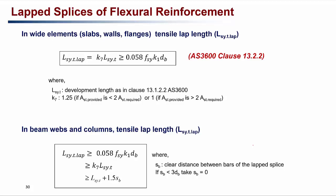AS3600 clause 13.2.2 gives the required lap length when splicing reinforcement. For wide elements like slabs, walls, or flange beams, the tensile lap length lsy.t.lap equals k7 multiplied by the development length, and must be greater than the specified minimum. k7 is taken as 1.25 when the area of reinforcement provided is less than two times the area required, or 1.0 when the provided area is greater than two times the required area. For beams and columns, the tensile lap length lsy.t.lap is given by three equations, and the greatest value governs.